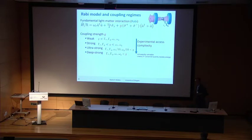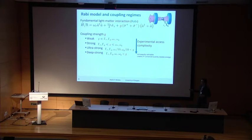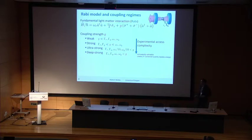Weak coupling means the coupling frequency is less than the linewidths of the individual quantum systems, and it's physically not so interesting. It becomes more interesting when the coupling strength is larger than the dissipation rate in both quantum systems — then you start having vacuum Rabi oscillations between both systems when on resonance.